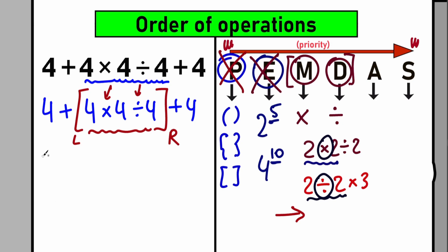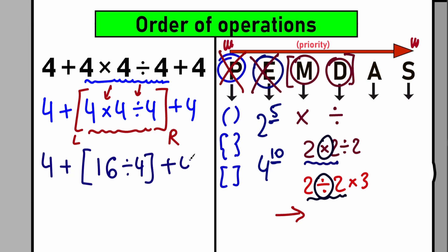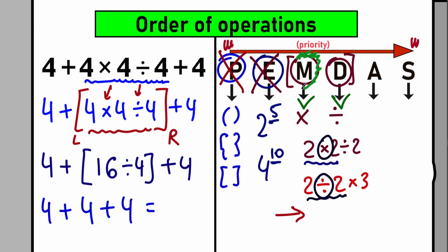So we have 4 plus [4 times 4] which equals 4 plus 16, and we still have division by 4 and plus 4. We completed the multiplication step — now we complete the division: 16 divided by 4 equals 4. So we have 4 plus 4, and still plus 4 on the right side. We've completed both the multiplication and division parts.